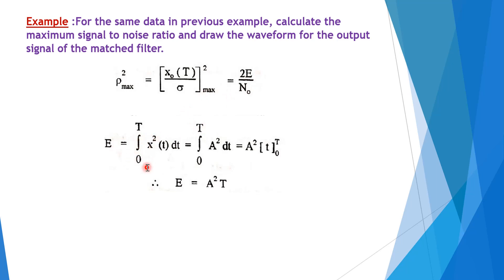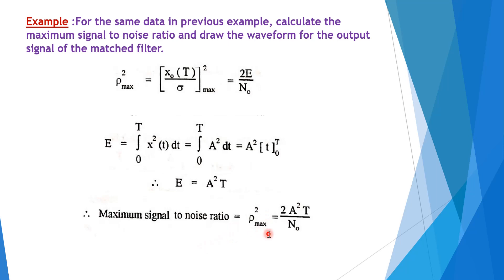Energy E equals the integration from 0 to T of x²(t) dt. Since x(T) = A, this gives E = A²T. Substituting into the SNR equation, the maximum SNR = 2E/N0 = 2A²T/N0.